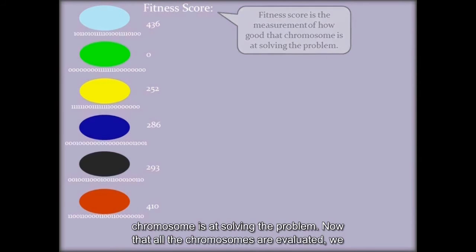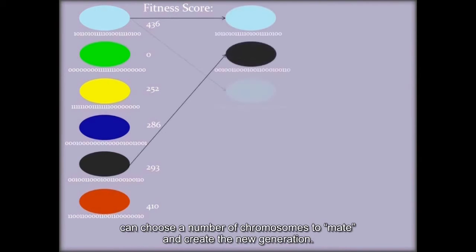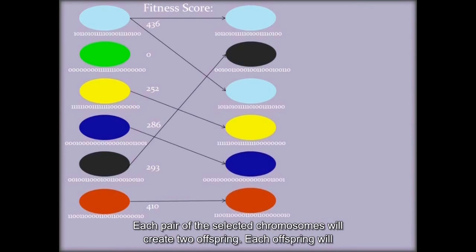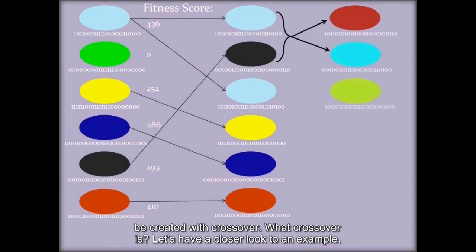Now that all the chromosomes are evaluated, we can choose a number of chromosomes to mate and create the new generation. Each pair of the selected chromosomes will create two offspring. Each offspring will be created with crossover.